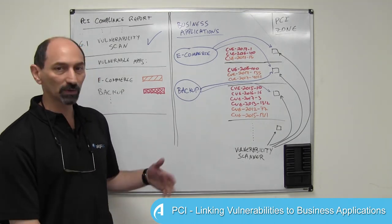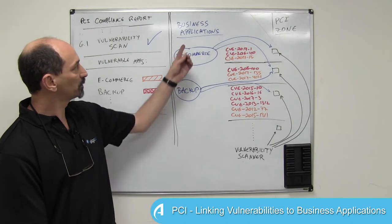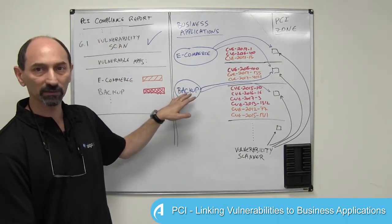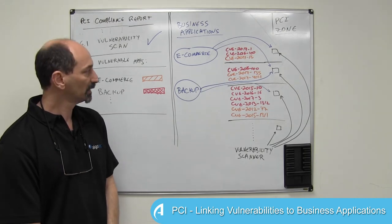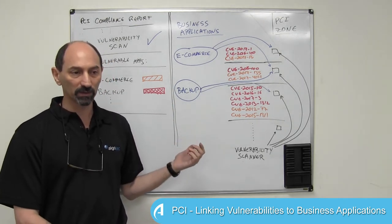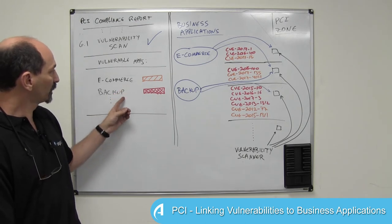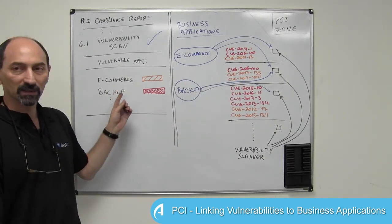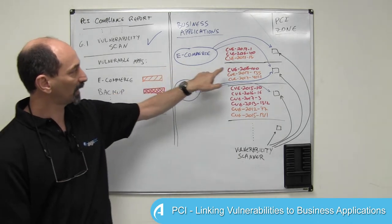This could be problematic from a business perspective. To prioritize these findings and schedule them for patching in a reasonable order, you need to know what each of these servers is actually functioning for — which business applications rely on it. Imagine you have a business application such as e-commerce that relies on two servers, and another application that handles backup relying on two other servers. It would enhance your PCI reporting if you had, inside the compliance report, a list of all business applications that rely on servers in the PCI zone, with an aggregated score next to each application.